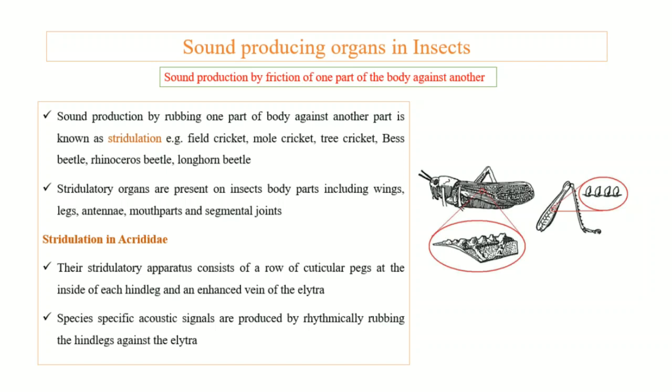The stridulatory organs in insects can be present on different body parts such as wings, legs, antennae, mouthparts, or segmental joints. Now let's discuss how stridulation occurs in different families. In family Acrididae, the stridulatory apparatus consists of circular pegs on the sides of their hind legs, and the elytra — their wings — have an enhanced vein.